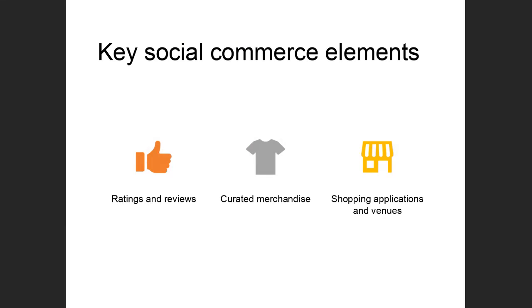Some key elements involved in social commerce: ratings and reviews — everyone's familiar with those — whether you do them only when you're unhappy with a purchase or also when you're satisfied. Then there's curated merchandise — whether you put items on a Pinterest board or use Amazon's AI recommender system. And finally, shopping applications and venues — in other words, the how and where we can get it done.